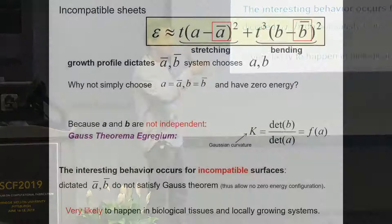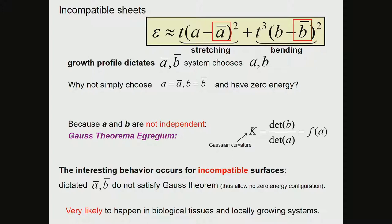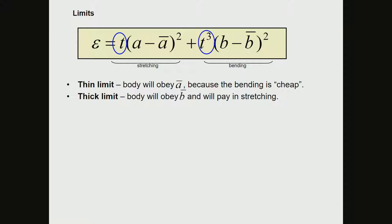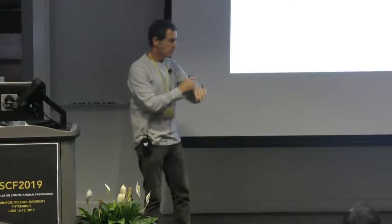Once we know how to connect these fields with three-dimensional shape, we can use it to design three-dimensional shapes in which the material cooperates with us. In the thin limit, we obey the metric; in the thick limit, we obey the curvature. If they are incompatible — if they don't tell us the same story — we will have different solutions from the same material with the same internal geometry but different thickness. This type of material can explore a very broad range of shapes.